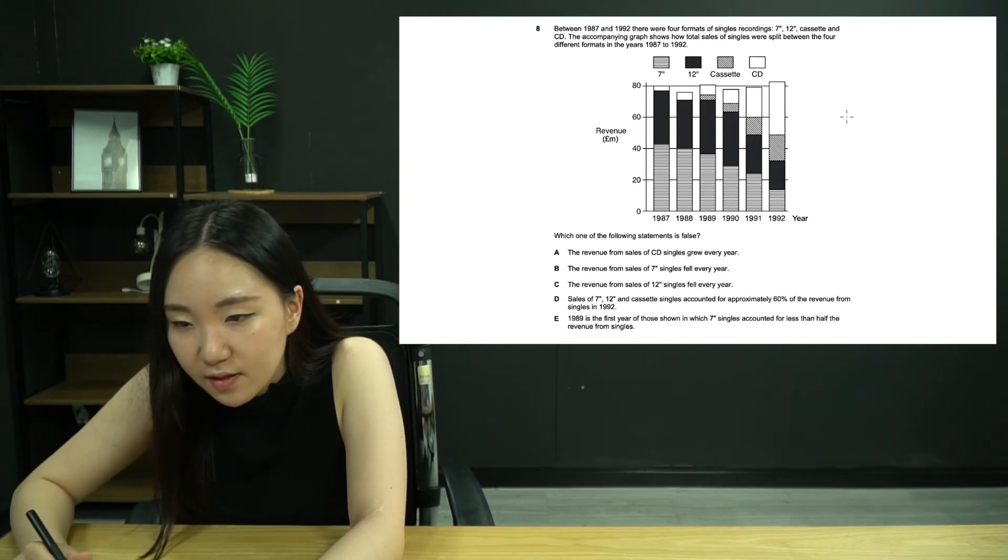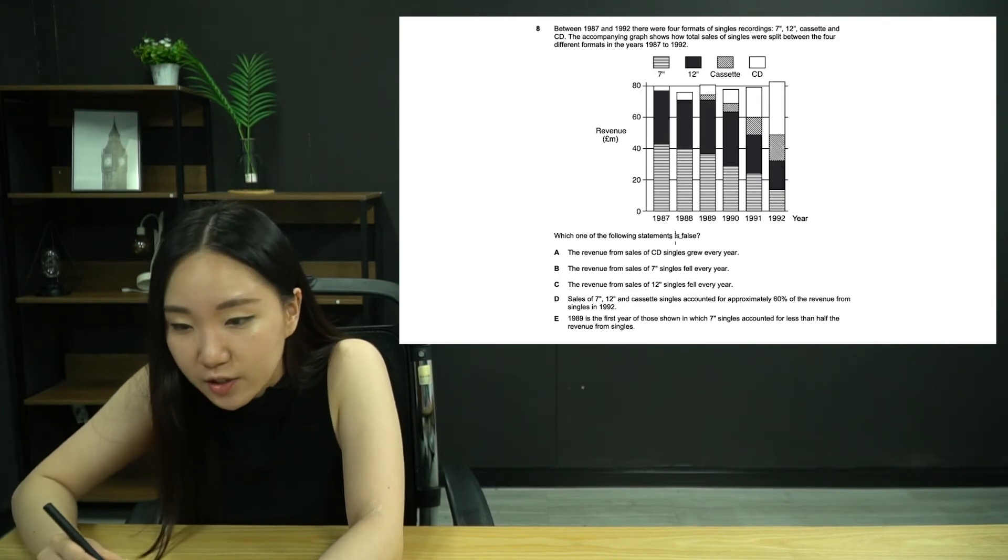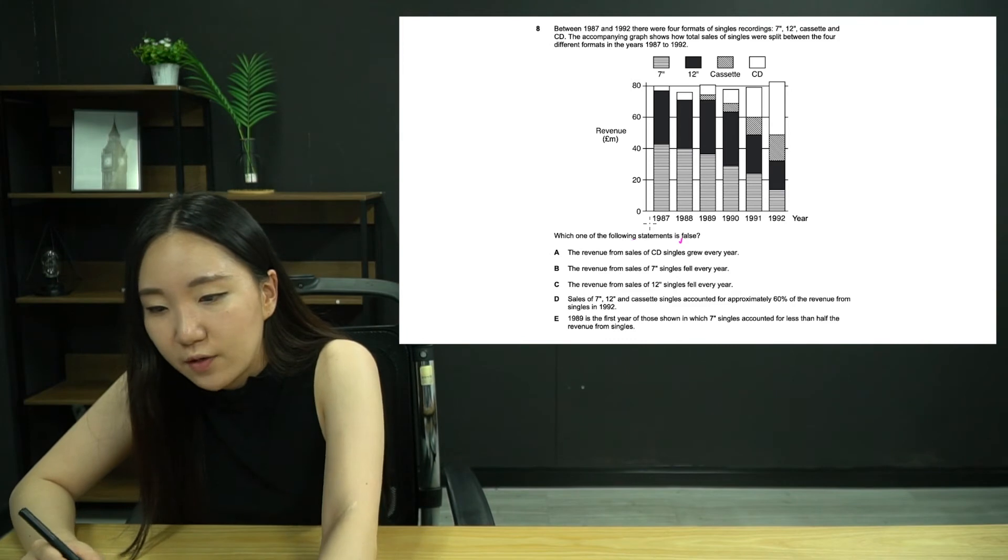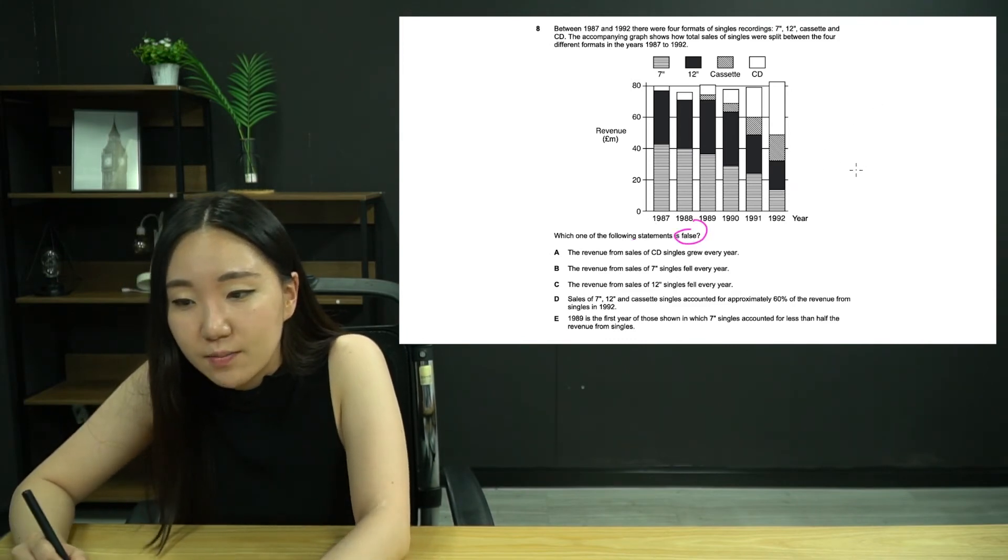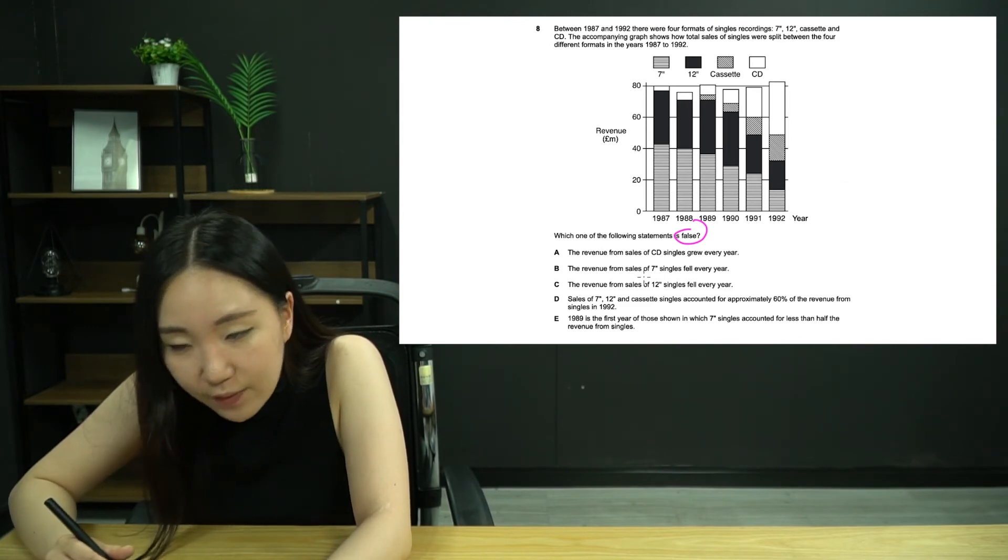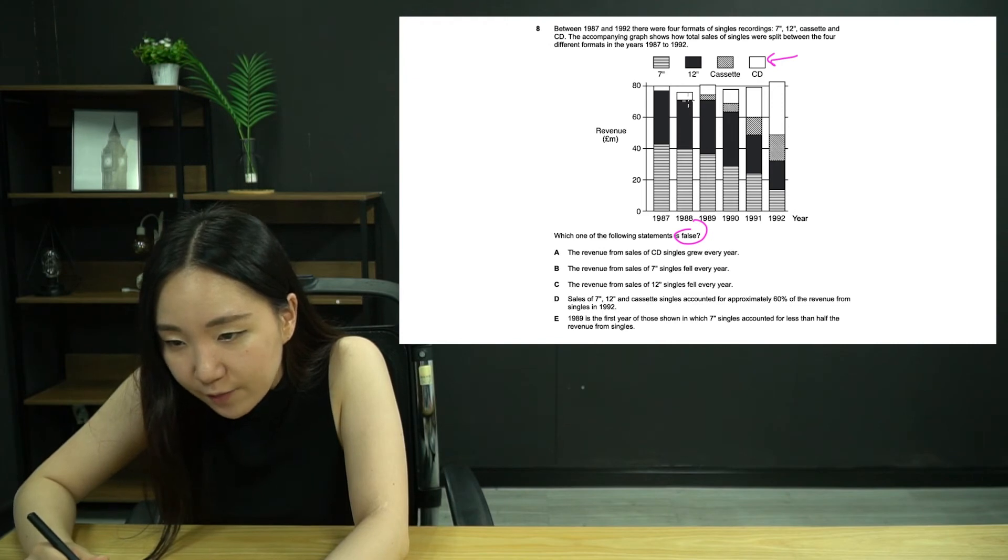Something's happening here. We're looking at a graph. Go straight to the question, which one of the following statements is false. Again, don't let it catch you out. Sometimes it says true, sometimes it says false. Go in order. The revenue from sales of CD singles grew every year. So CD singles is the white. We just have to make sure it's growing year on year. Grown from here to here. Yes, yes, yes, yes, yes. So it's not that one, that is true.